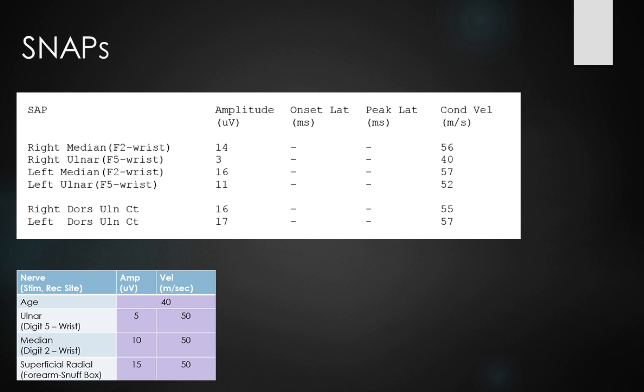Well, the first thing we're going to see is we've got a normal right median F2 snap, 14 and 56. However, if we have a look at the right ulnar finger 5 response, it's only got an amplitude of 3 microvolts, and there's a small degree of conduction velocity slowing here as well, about 40 metres per second.